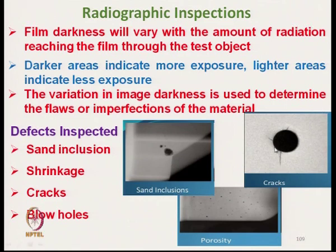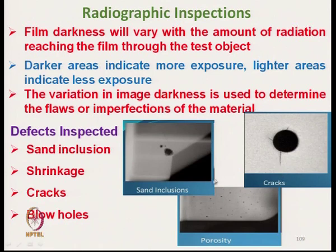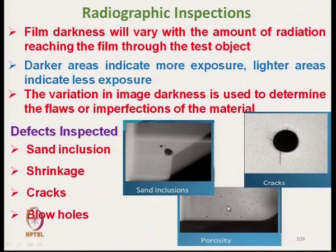This is showing the crack inside the material by a darker zone. This is the normal portion, but at the surface of this normal portion there are cracks which are not visible — which are inside the structure. As the cracks are there, more exposure was there, and that is why it is showing in the darker zone. Similarly, sand inclusions or porosity — if there are void contents, the exposure will be more and it will show as dark spots.